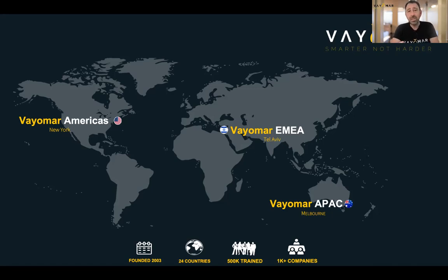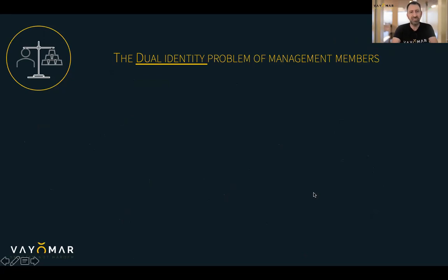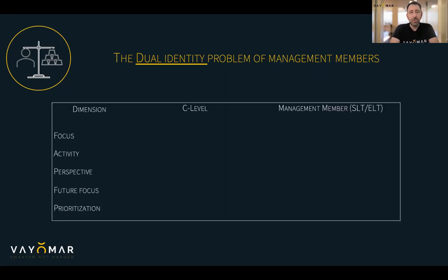I'm not suggesting that your company's leadership team — or if you're on that team — necessarily suffers from these problems. It could be that you're performing very well. But as a general rule, we have found that this is almost genetically inherent to senior executive leadership teams. Let's talk about the first one. We call it the dual identity problem.